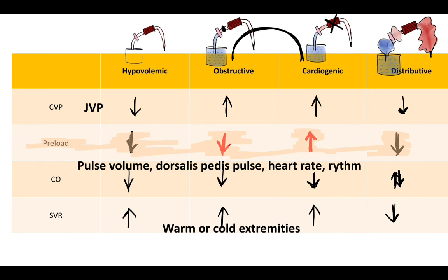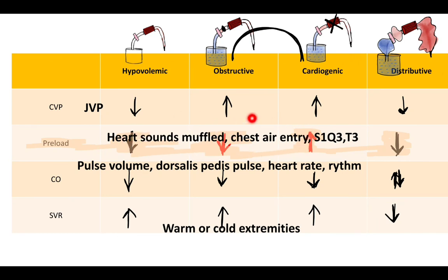To distinguish obstructive from cardiogenic shock, look for specific clinical signs: muffled heart sounds suggest pericardial tamponade; absent air entry suggests tension pneumothorax; and an S1Q3T3 pattern on ECG suggests pulmonary thromboembolism. For cardiogenic shock, look for ECG changes such as myocardial infarction. Even without advanced monitoring, basic clinical assessment provides enough information to identify the shock type.